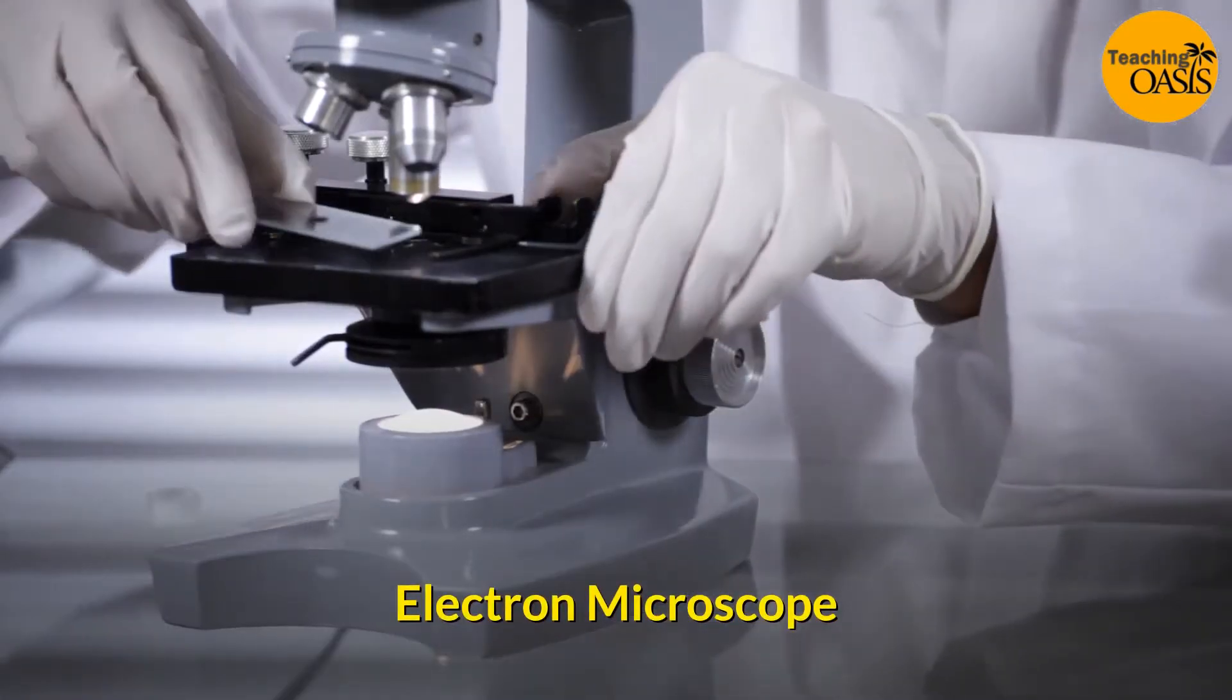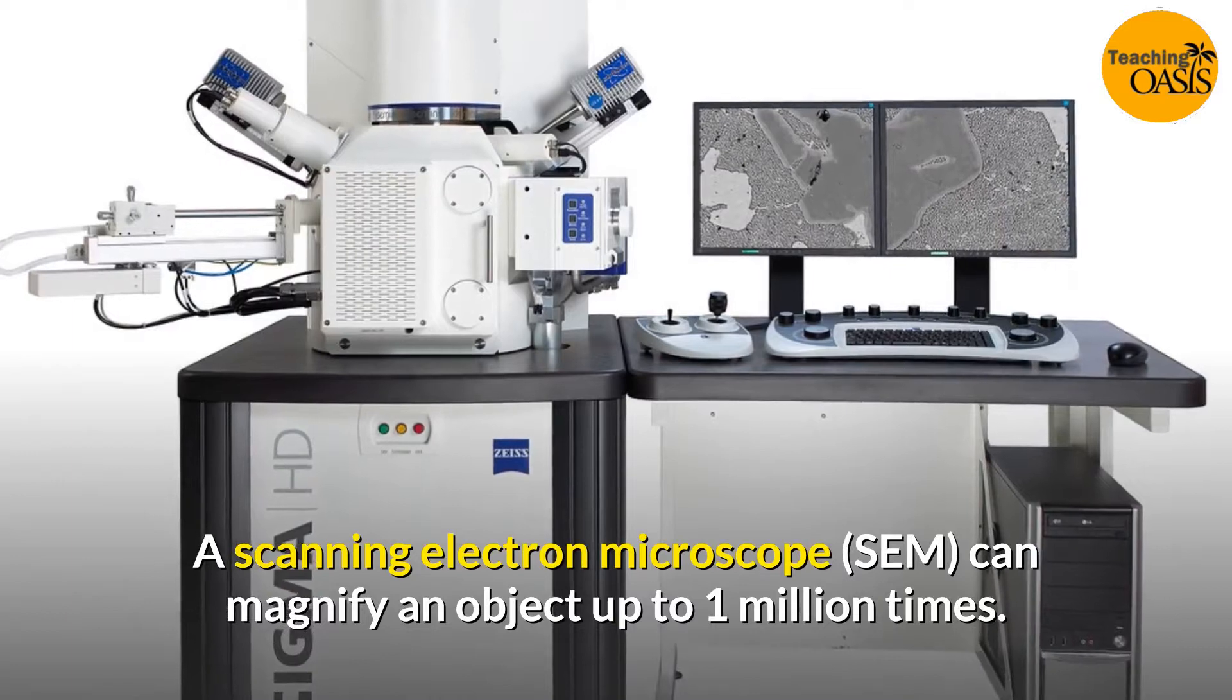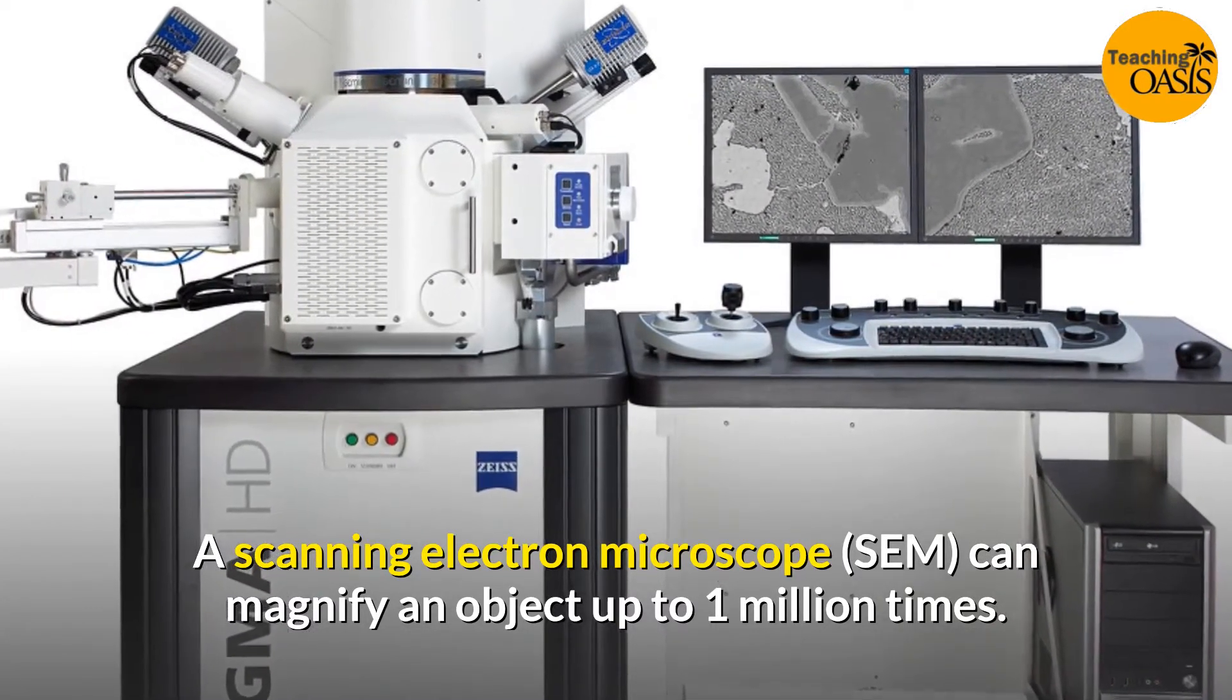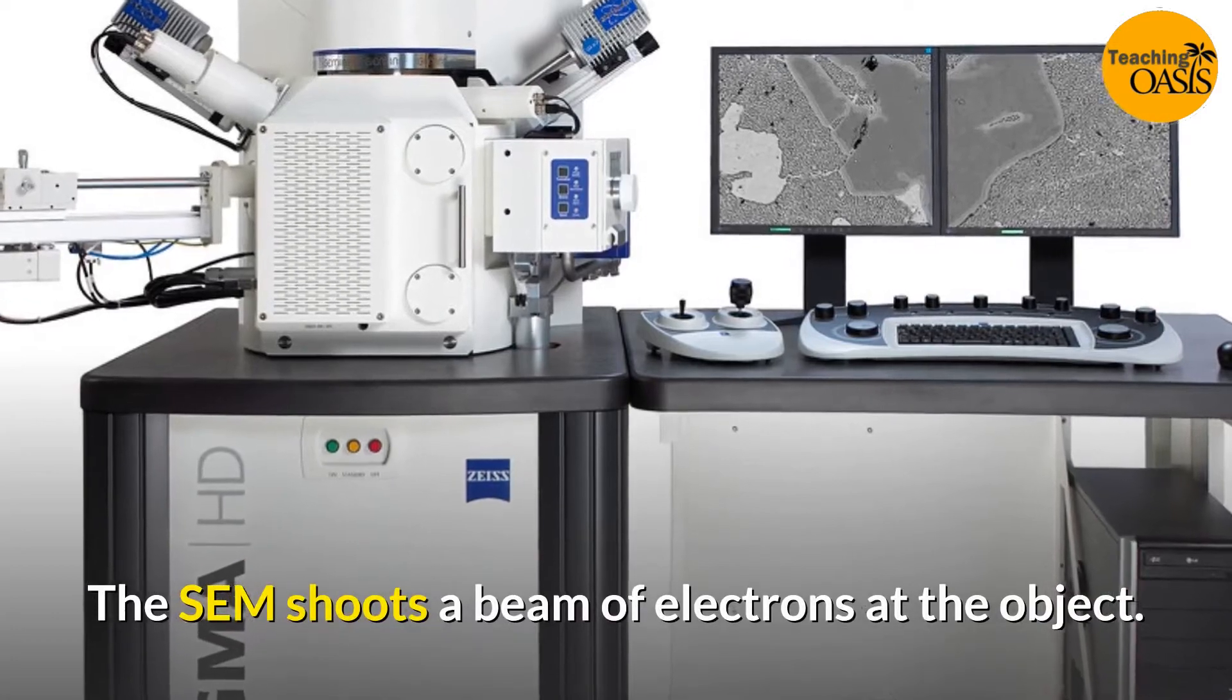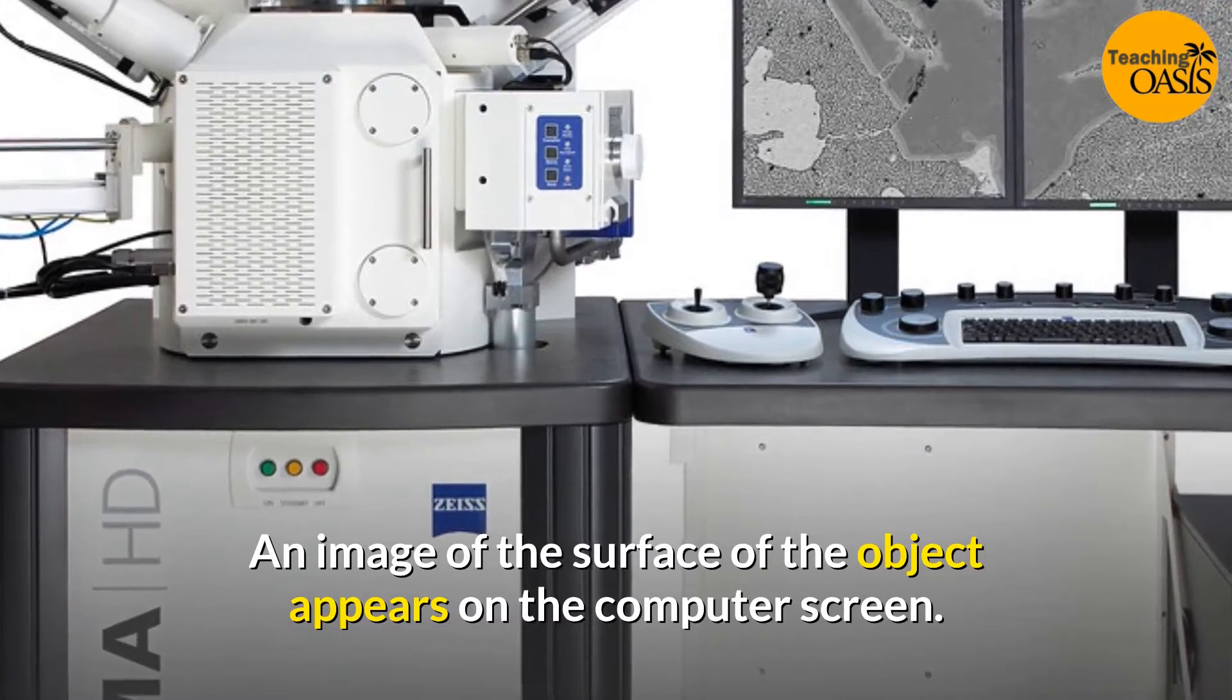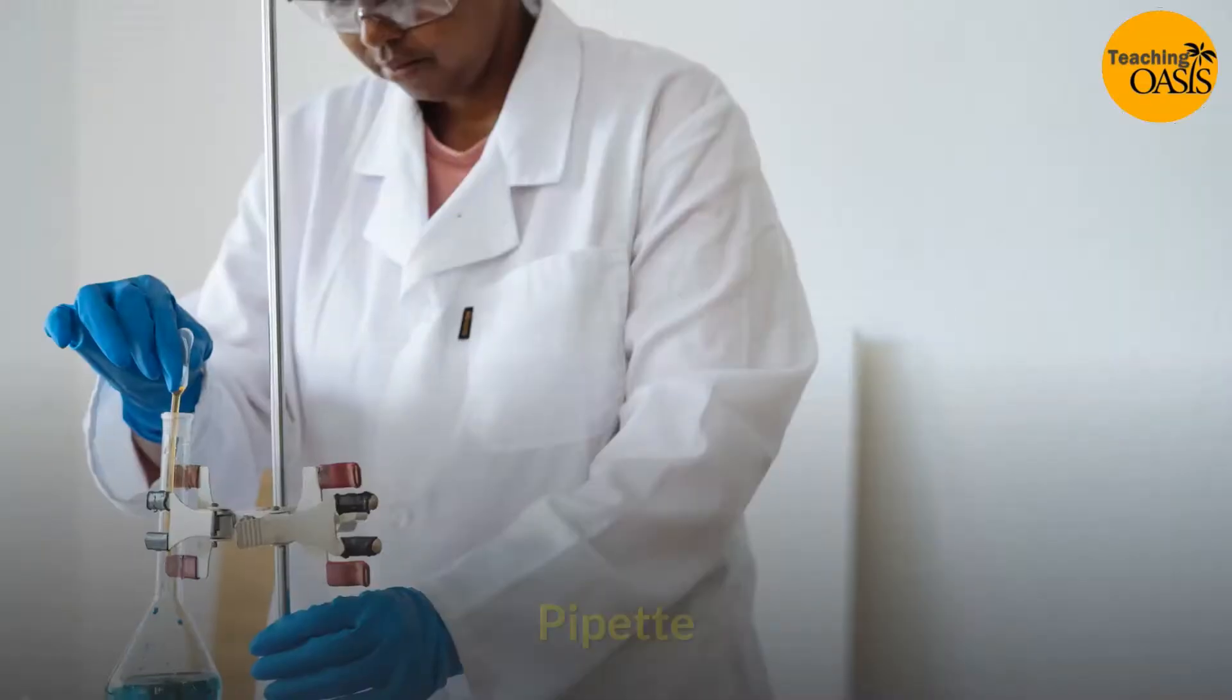Electron microscope: A scanning electron microscope (SEM) can magnify an object up to 1 million times. The SEM shoots a beam of electrons at the object. An image of the surface of the object appears on the computer screen.